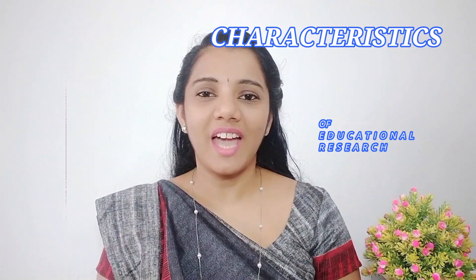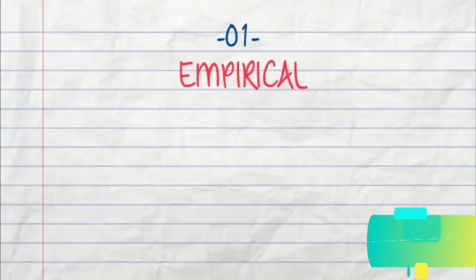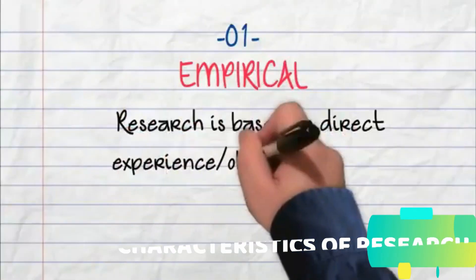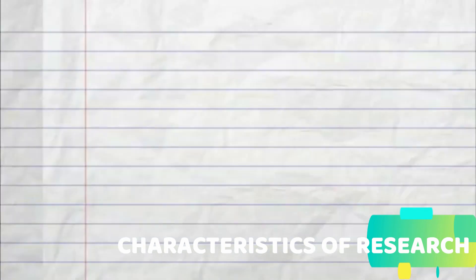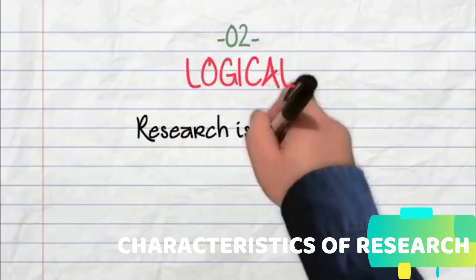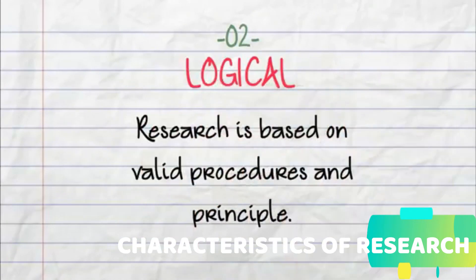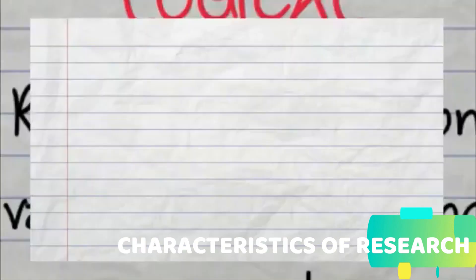In an overall view, when considering the characteristics, educational research is ultimately scientific — it is based on scientific method and follows a scientific and systematic approach. Characteristics of educational research can be viewed in two ways: a general point of view and by simply listing them out. In the first aspect, educational research considers empirical as a characteristic feature: research is based on direct experience or observation by a researcher. The second characteristic is the logical aspect — research is based on valid procedures and principles.